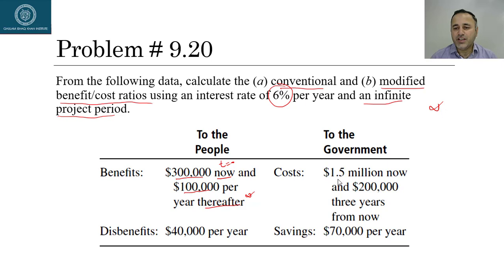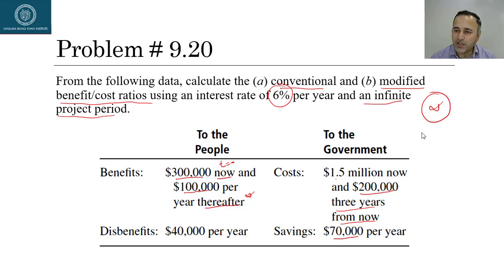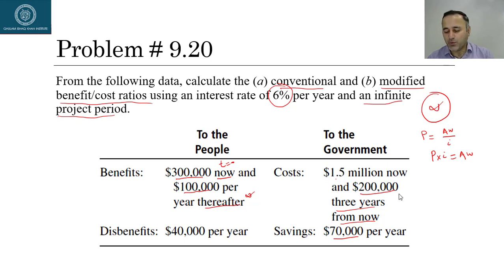Costs are 1.5 million dollars now and two hundred thousand dollars three years from now. Savings are seventy thousand dollars per year, forever. For an infinite-life project, recall from earlier chapters: the present worth of a perpetual annuity is A divided by i. So to convert a present worth P into annual worth, you multiply P by i. This basic concept will be used throughout this problem.